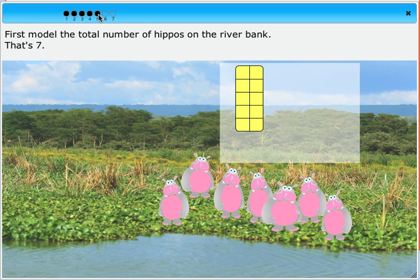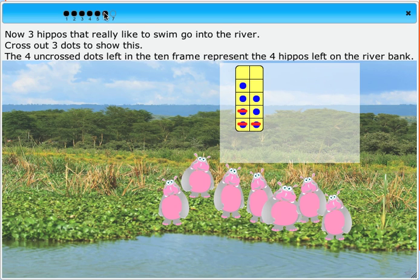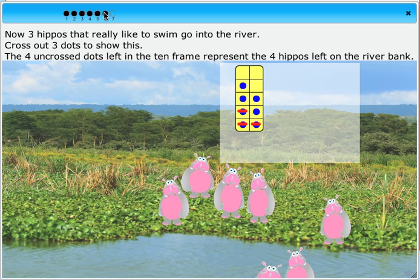First, model the total number of hippos on the riverbank. That's seven. Now, three hippos, that really like to swim, go into the river.